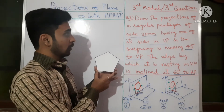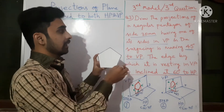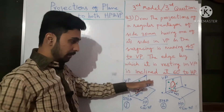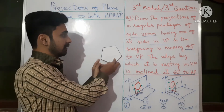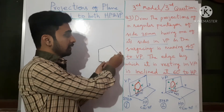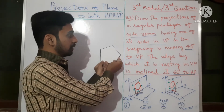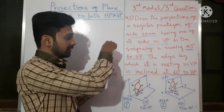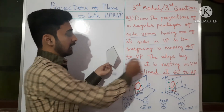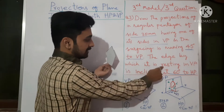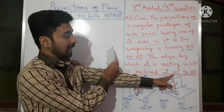Assume a Pentagon of side 30 mm. One of its edges or sides is in the VP — imagine this as the vertical plane. One side of the Pentagon is in the VP like this. Its surface with respect to the VP is making some angle — it is now making 45 degrees with respect to the VP. The edge is resting in the VP, and next, the edge by which it is resting should be at 60 degrees with respect to the HP.